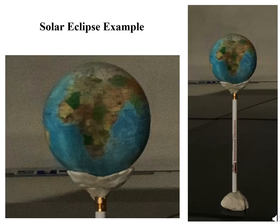These photographs show what the Earth looks like when everything is in position for a solar eclipse. This is the same configuration as shown previously in the model setup. Note the shadow centered on the Earth.